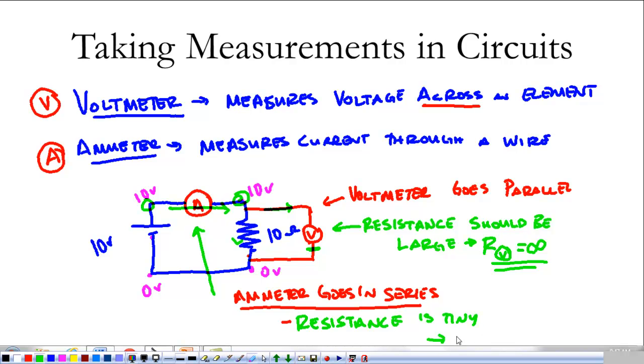So ideally, we want the resistance to be tiny. So for this ammeter, the resistance is going to equal zero, ideally. Usually, it can't get down to zero, but we can get really close. So in an ammeter, we want the resistance to be very small.